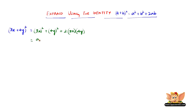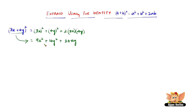Now, 3x the whole square is 9x squared. 4y the whole square is 16y squared. Plus 2 into 3 is 6, and 6 into 4 is 24, and x into y is xy. So the expansion of 3x plus 4y the whole square is 9x squared plus 16y squared plus 24xy.